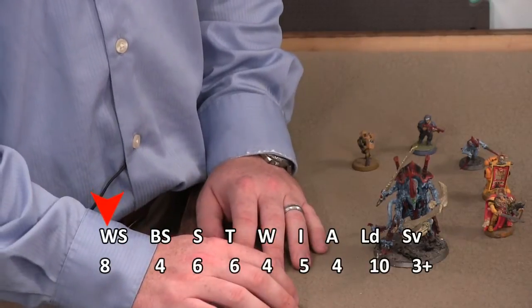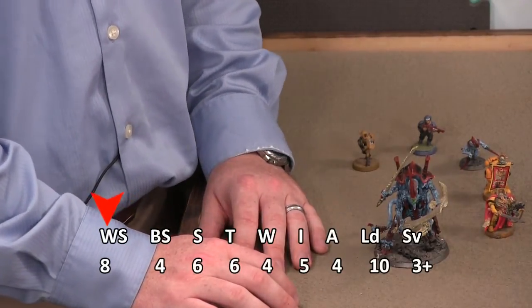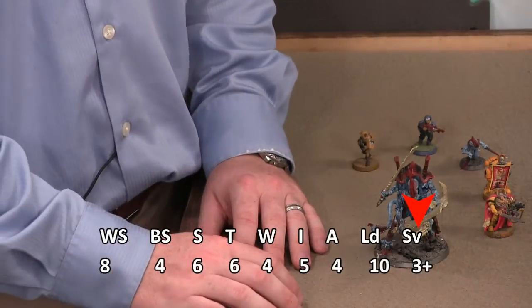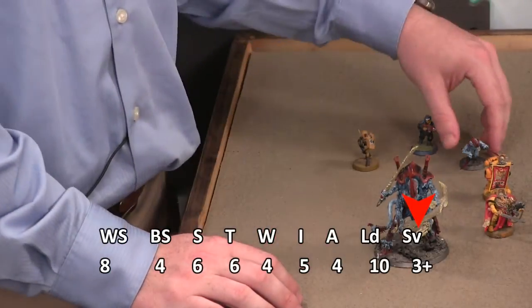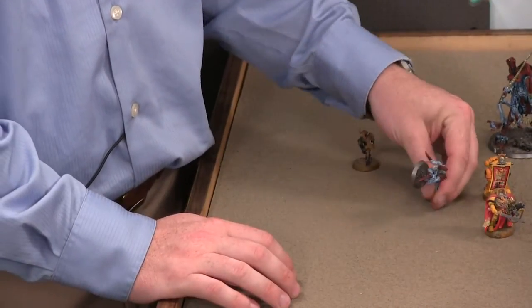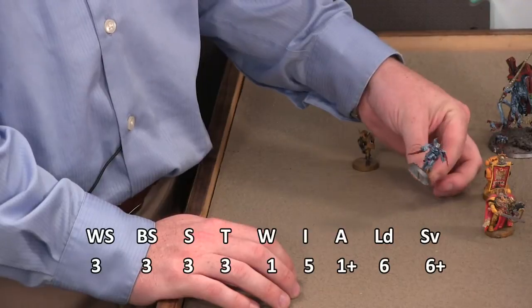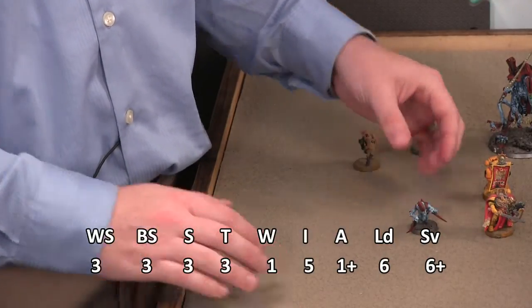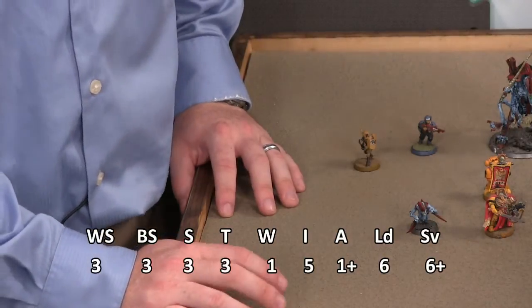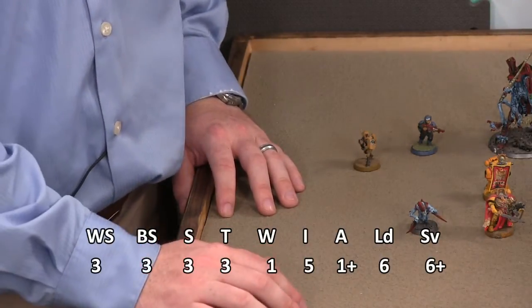And also, you notice there, he's got a save of three plus. So let's take a look at one of his different units. I've got here the wee little hormagaunt. Now there's only one right now. Take a look at that stat line. Not really that impressive. A lot like an imperial guardsman. One thing you can notice. Look at that save. That's a six up save. That's not a very good save. Leadership fairly low.